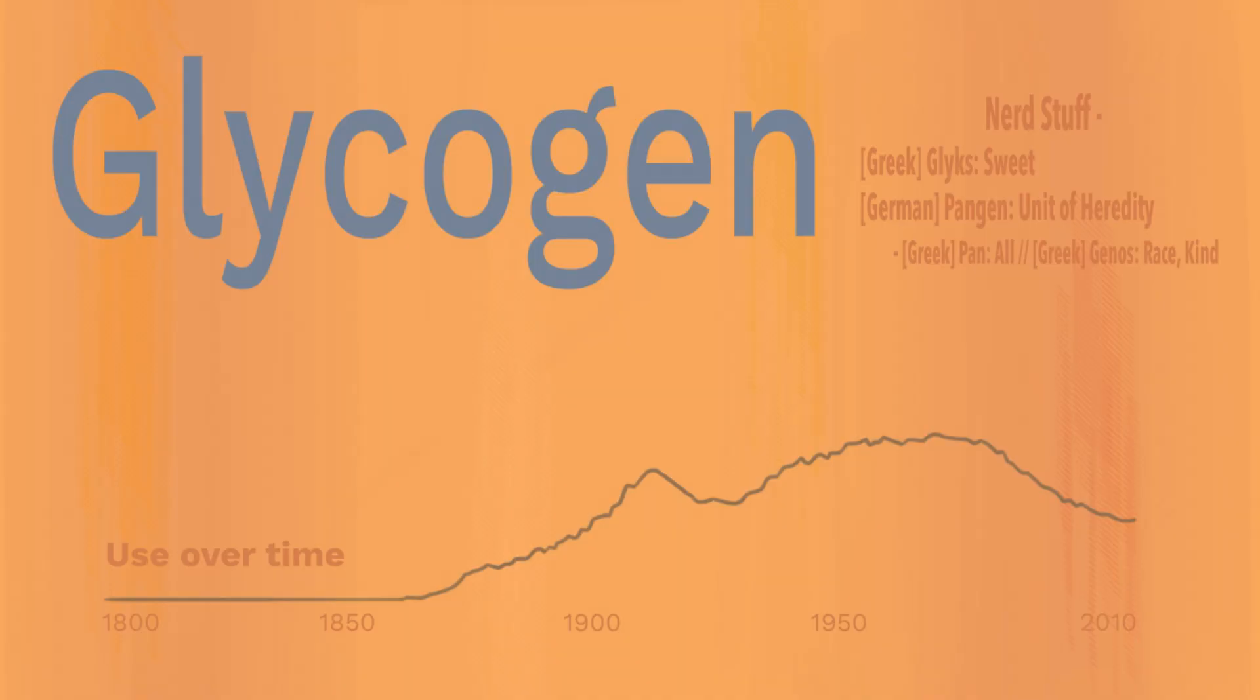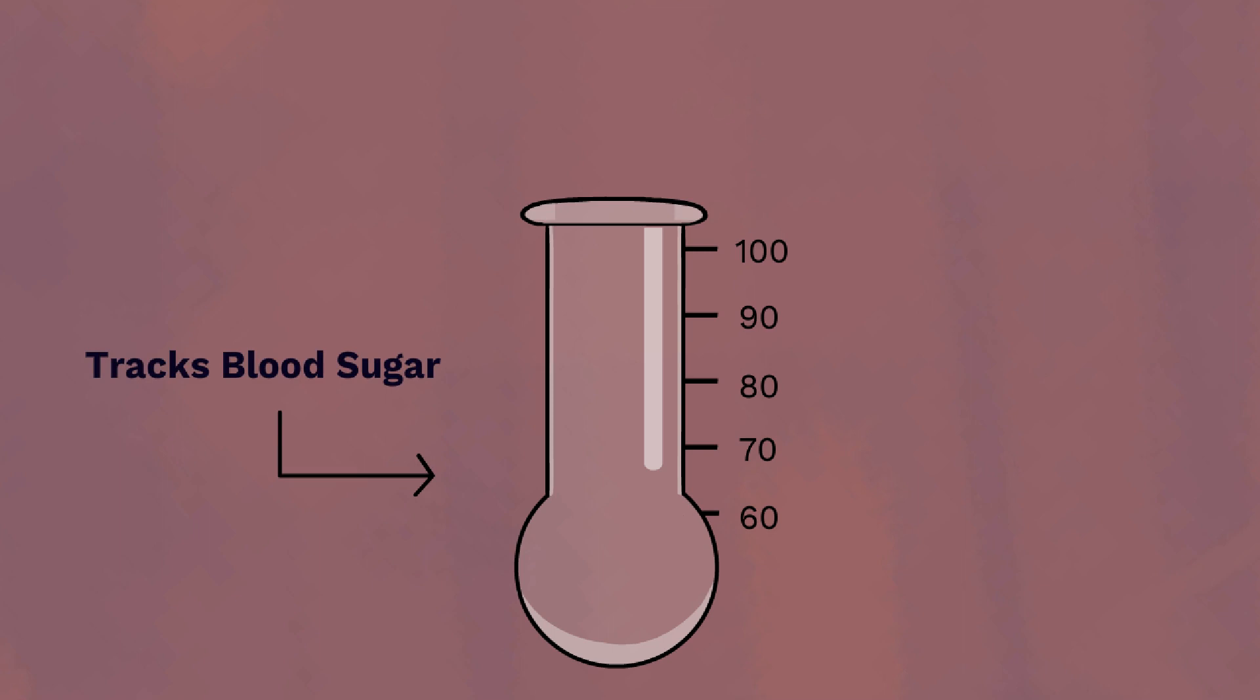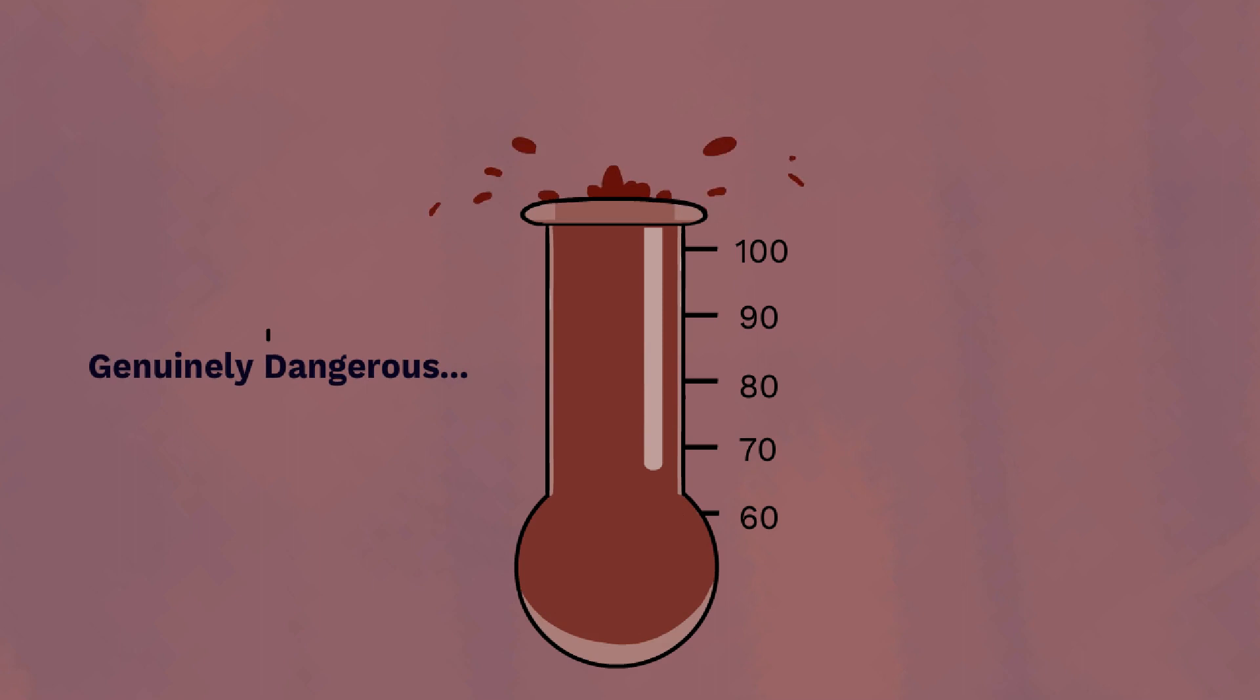So what is glycogen? Glycogen is a form of stored energy. It is typically created when your blood sugar rises above 100.